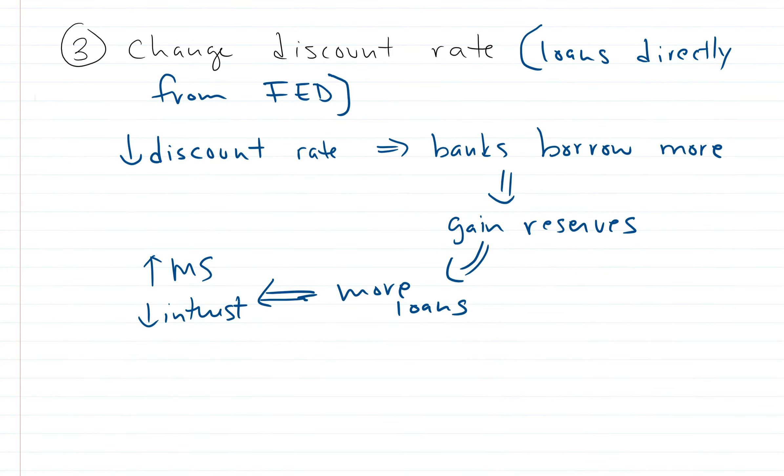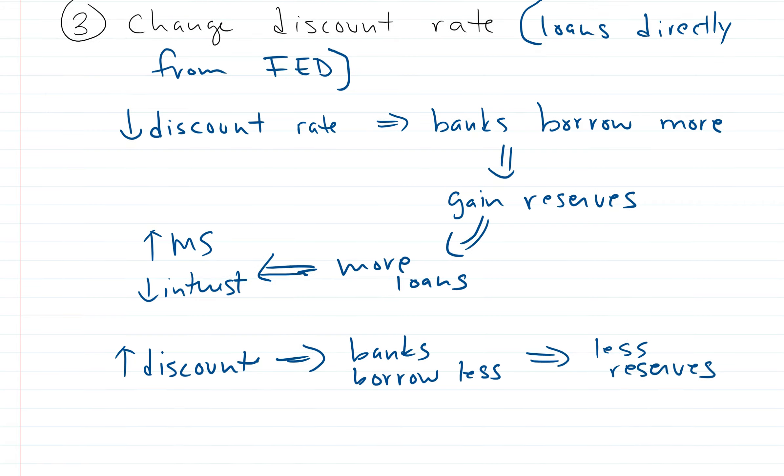And then the other thing would also be true if they raise the discount rate. Banks borrow less, then they're going to have less reserves because they're not borrowing as much compared to what they would have at a lower interest rate. And so they do less loans, and less loans leads to lower money supply and a higher interest.